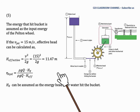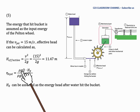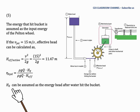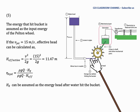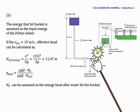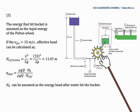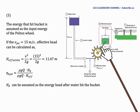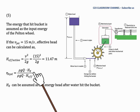The hydraulic efficiency is calculated as the Euler head divided by the effective head. The Euler head represents the energy transferred to the wheel when water hits the bucket — it is the output power that rotates the Pelton wheel. Therefore, hydraulic efficiency = Euler head / effective head.